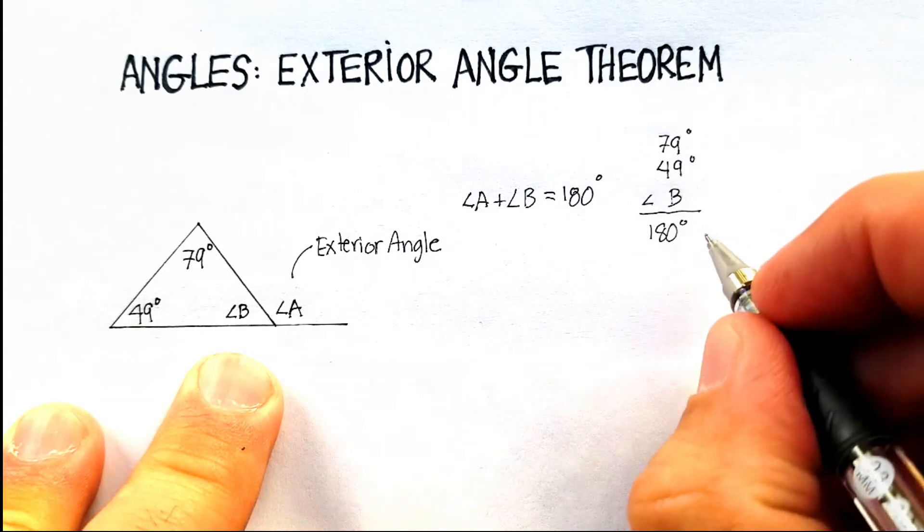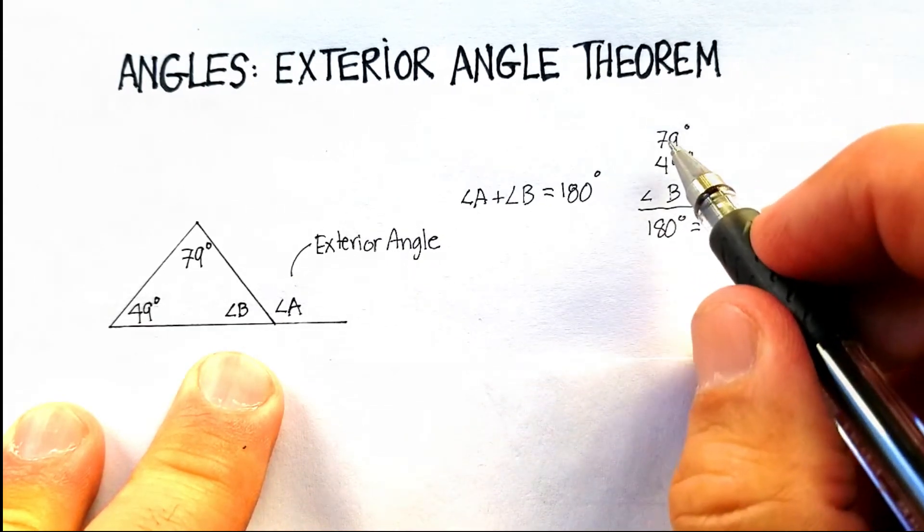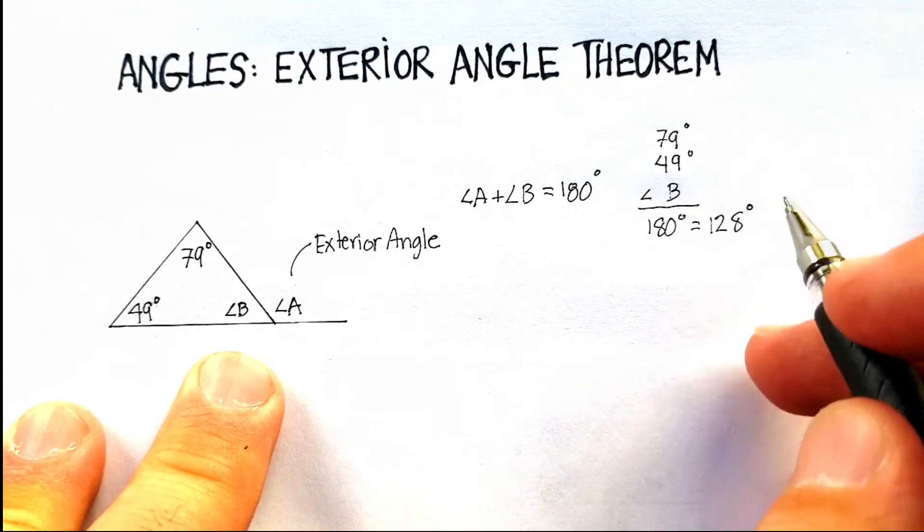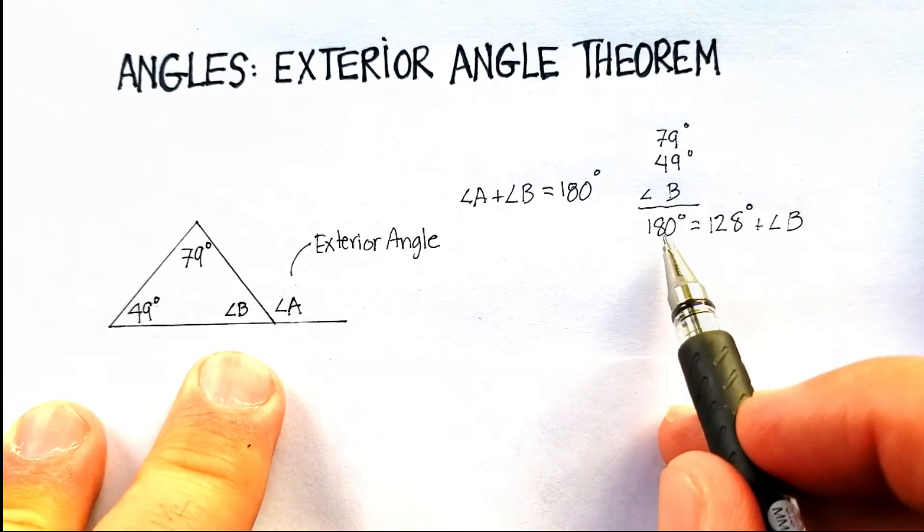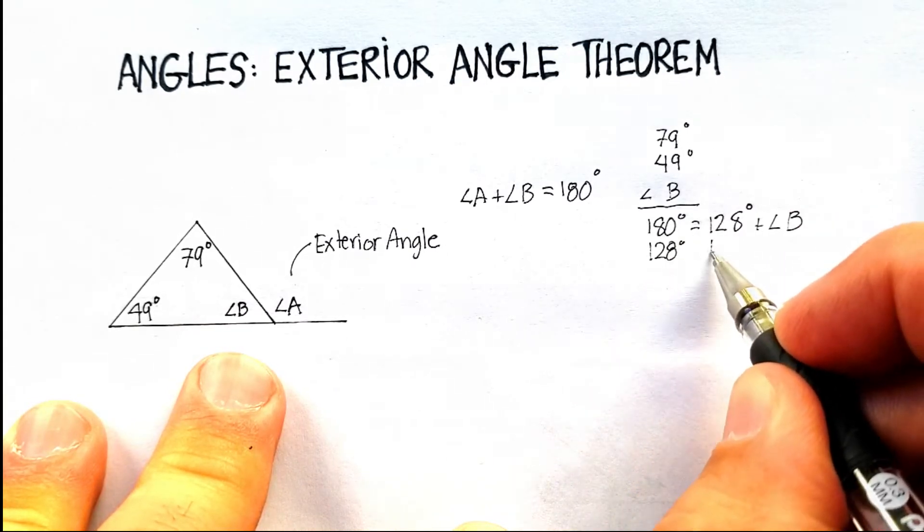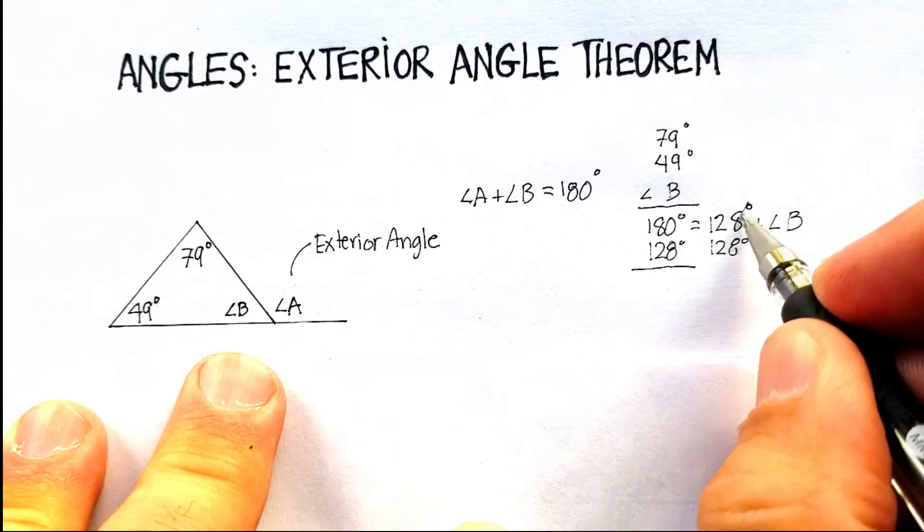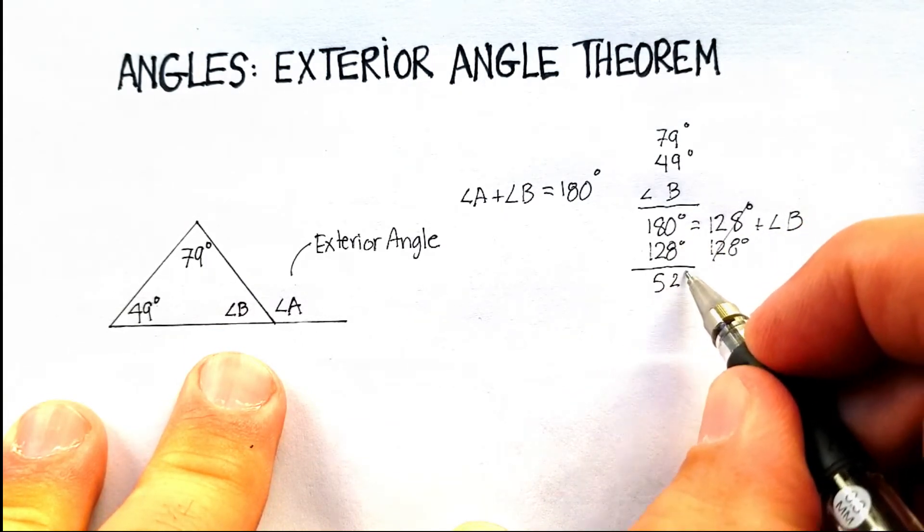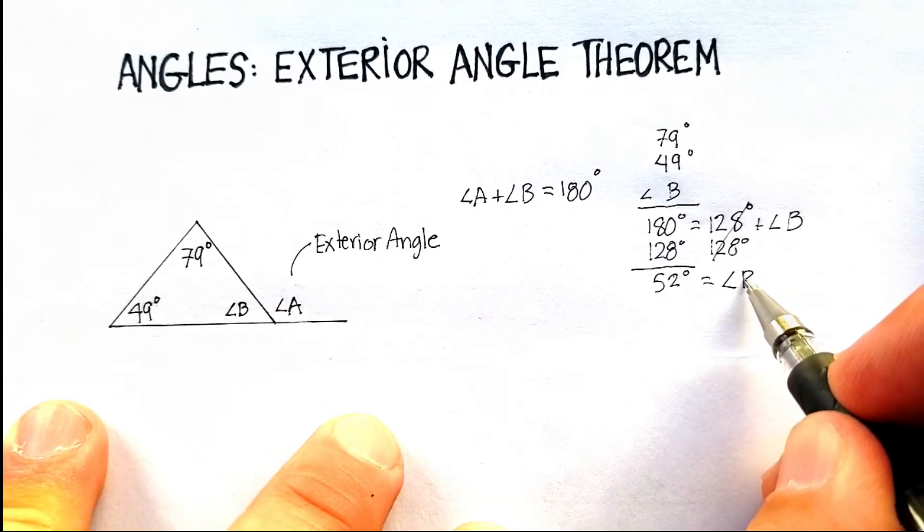So let's add those two up. And we get 18, carry the 1. That's 812. So 128 degrees plus angle B should equal 180. Let's subtract 128 from both sides. That goes away. And we get 2752.